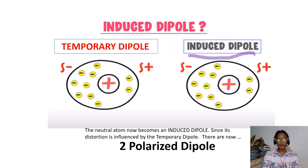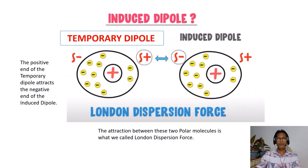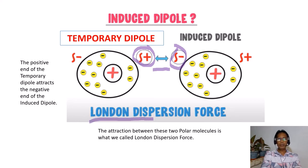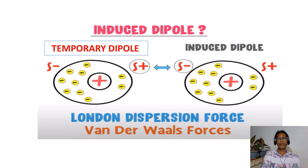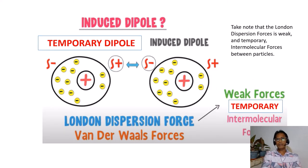There are now two polarized dipoles: the temporary dipole and the induced dipole. The positive end of the temporary dipole attracts the negative end of the induced dipole. This force of attraction is what we call the London dispersion force, also called the Van der Waals force. Note that London dispersion forces are weak and temporary intermolecular forces between particles.